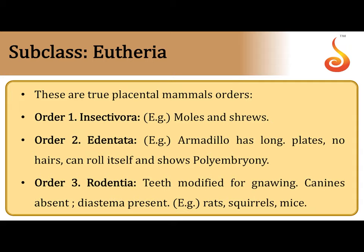The true placentals belong to the infra class Eutheria under subclass Theria. Order one is Insectivora, like moles and shrews. Order two is Edentata — the armadillo has long plates on its body, can curl itself when disturbed, and also exhibits polyembryony, where one zygote produces many young ones.